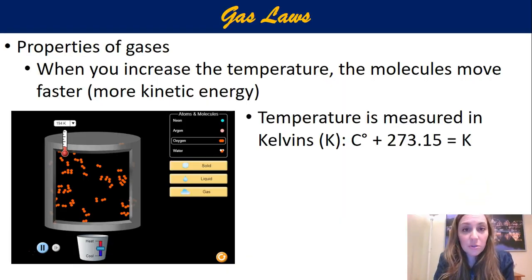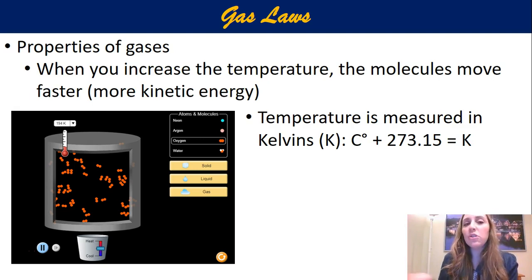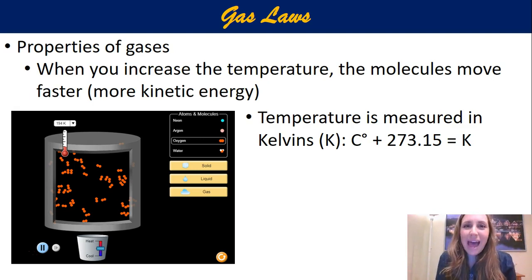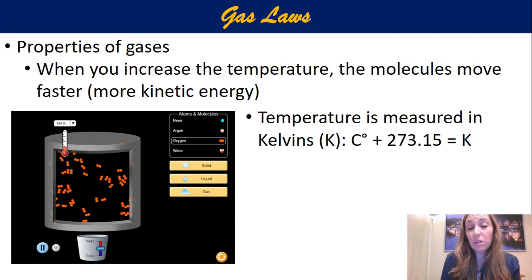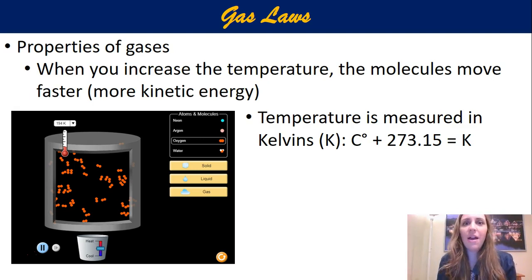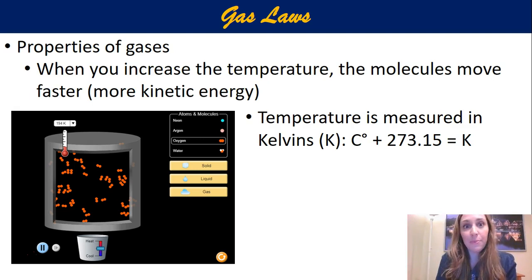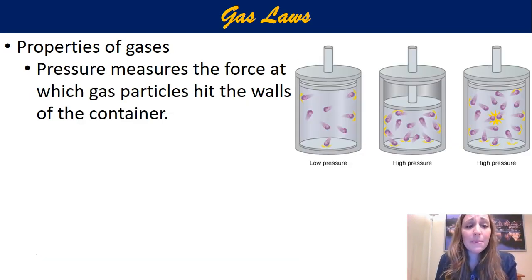When we measure temperature using gas laws, we always use Kelvins. If you're given something in Celsius, add 273.15 to get Kelvins. Kelvins is an absolute temperature scale, meaning there are no negatives — the lowest temperature theoretically possible is zero Kelvins, or negative 273.15 Celsius. We haven't actually achieved absolute zero in the lab, but make sure your temperatures are in Kelvins or your math will not work.